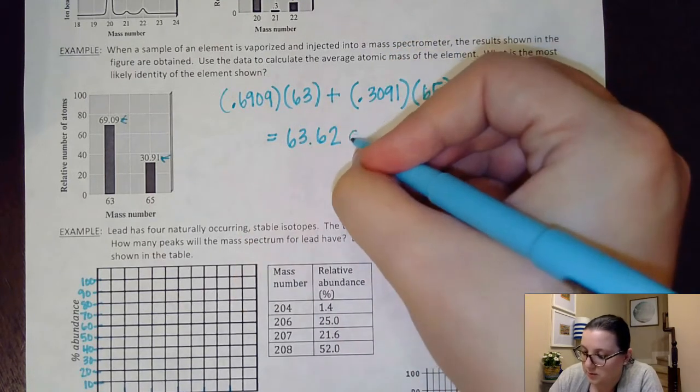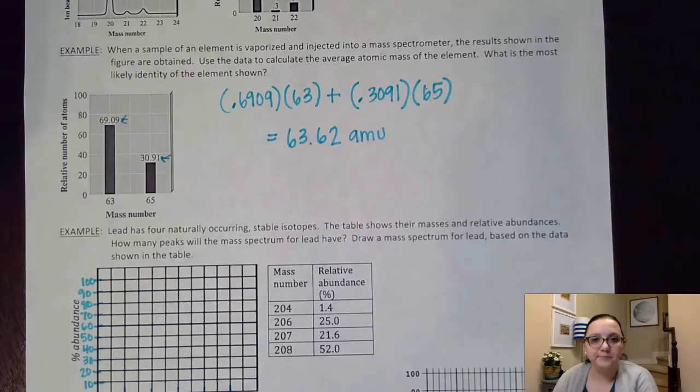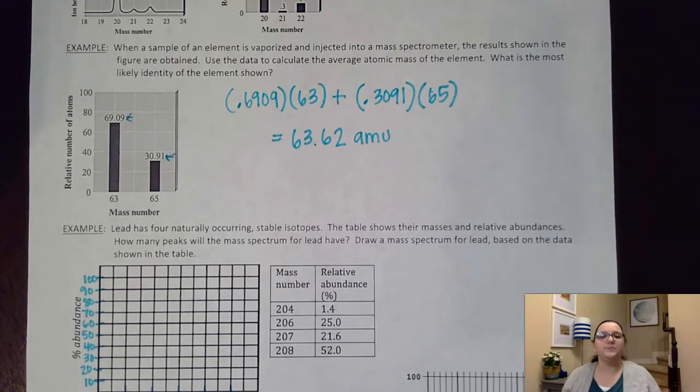And if you wanted, you could go ahead and put atomic mass units with it. So, calculate the average atomic mass. Now, I ask, what is the most likely identity of the element shown? And this brings up kind of an important point I want to talk about here.